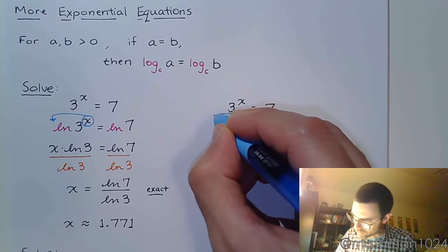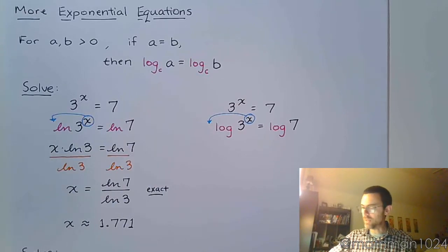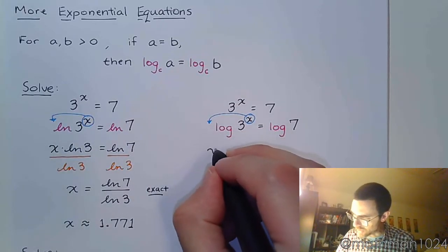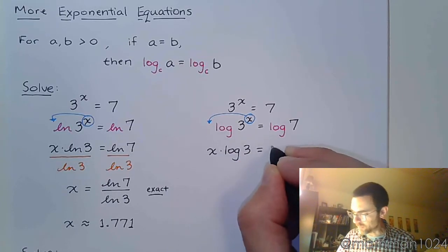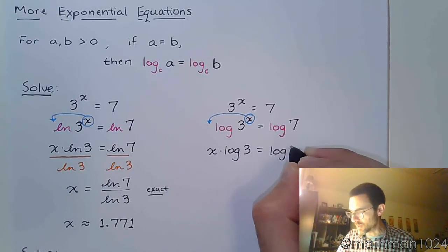This power gets to be written out in front. So this becomes x times the log of 3 is equal to the log of 7.